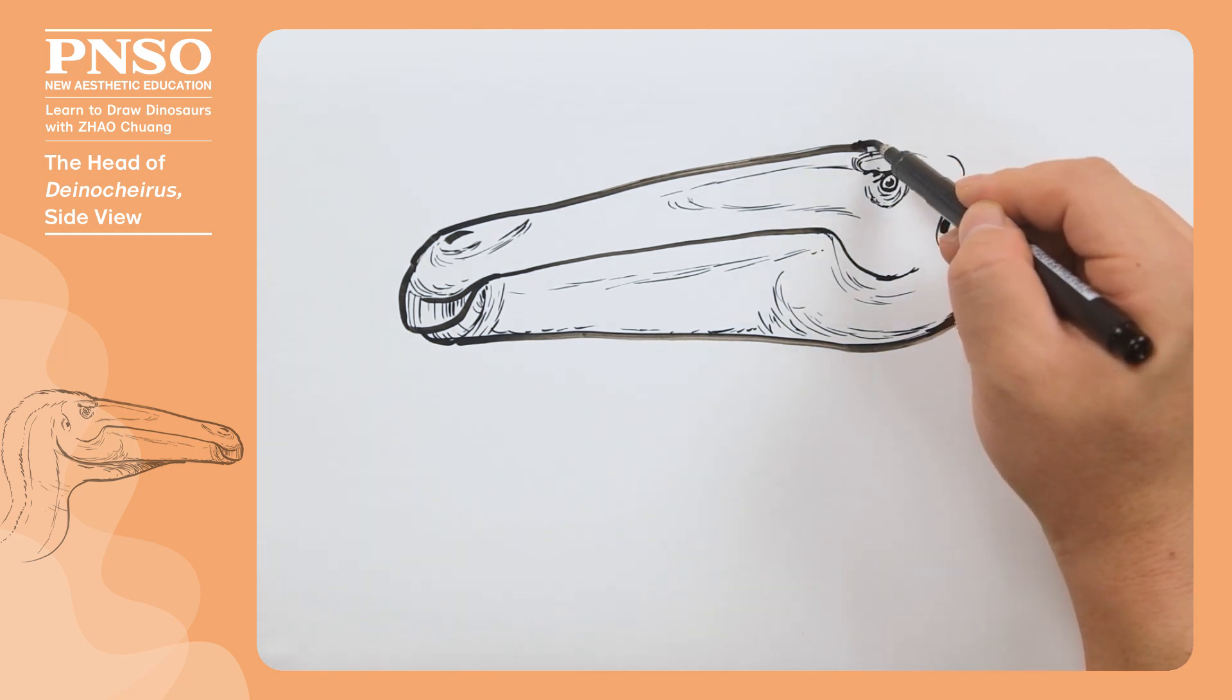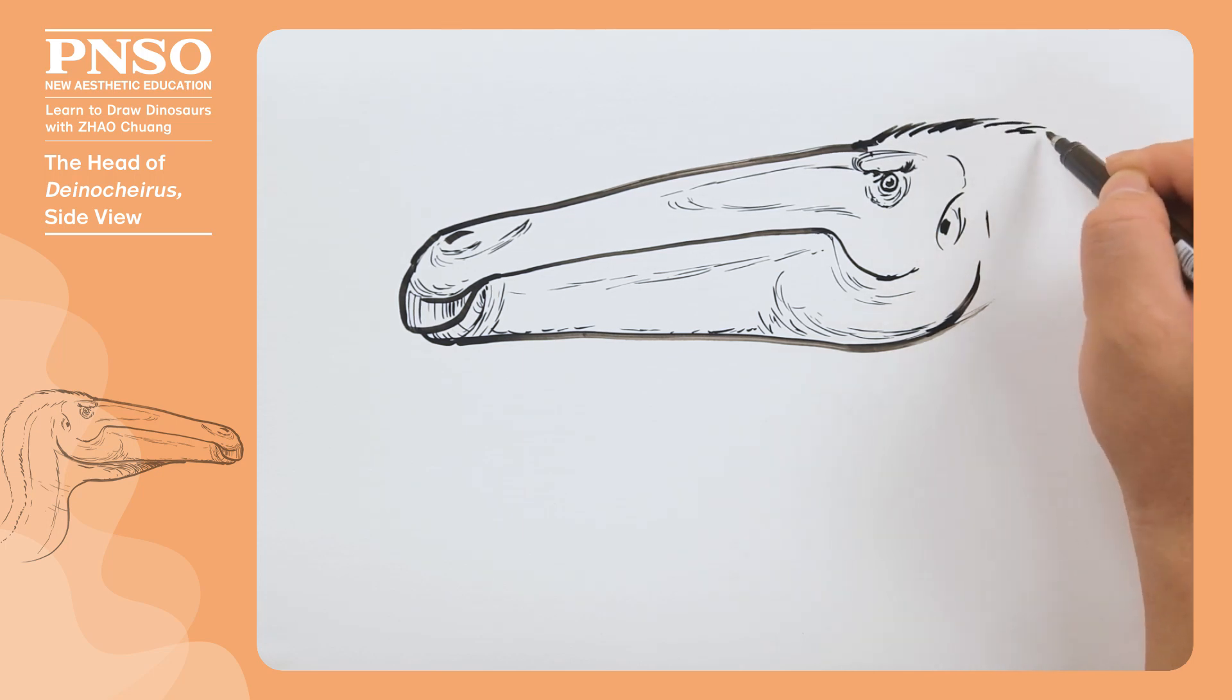Now, we draw its neck. There might be some very short fine hairs on the top of its head and its neck, so when drawing the back half of the neck, we can draw more fine hairs.